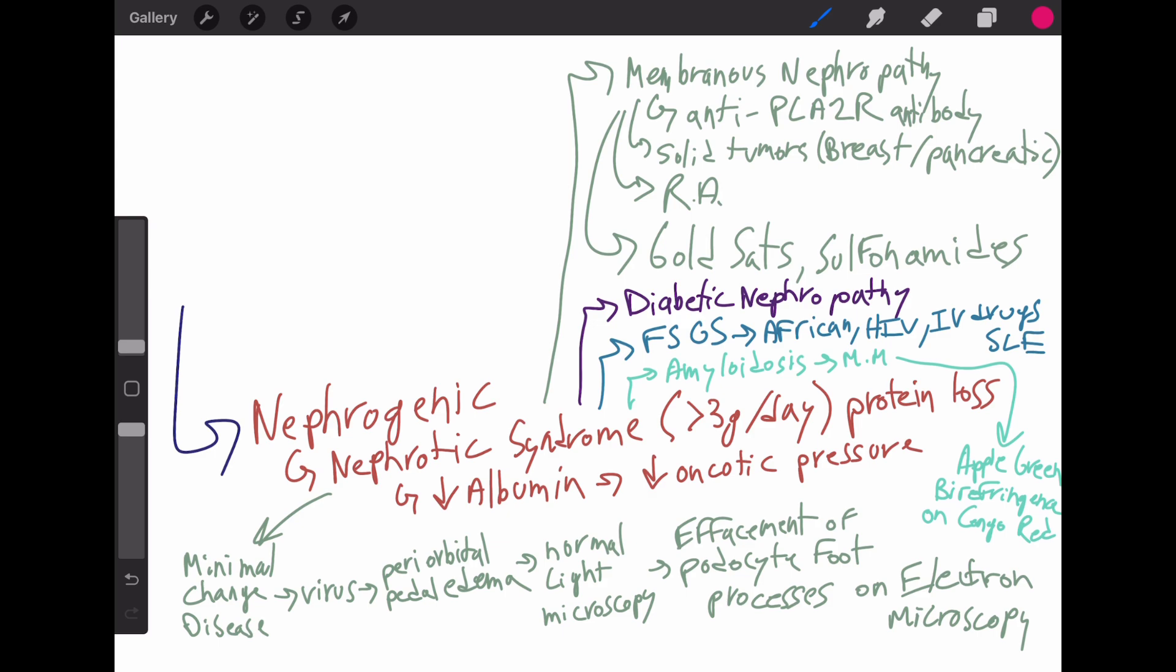Up next, we have focal segmental glomerulosclerosis, FSGS. This is common in African-American patients, HIV-positive patients, heroin users, and SLE patients. Amyloidosis is seen in patients with multiple myeloma. Light chains form deposits in various organs, including the heart and kidneys. Congo red stain shows apple green birefringence under polarized light. This is buzzword stuff you have to know.